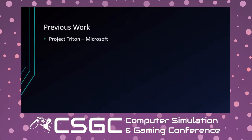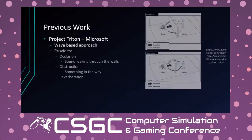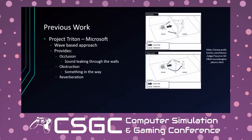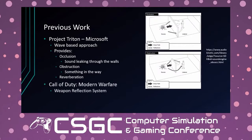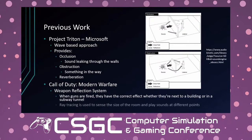Some previous work in this space: from Microsoft there's Project Titan, a wave-based approach that provides occlusion (sound leaking through walls), obstruction (something blocking the path), and reverberation. In Call of Duty: Modern Warfare, they have a weapon reflection system where guns fired produce the correct effect for the nearby environment — subway tunnels, buildings. They also use ray tracing to sense room size and play sounds at different points to increase immersion.